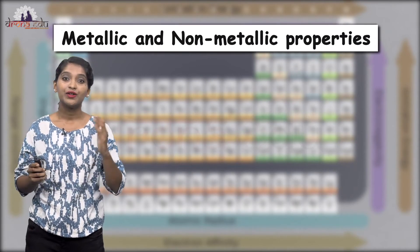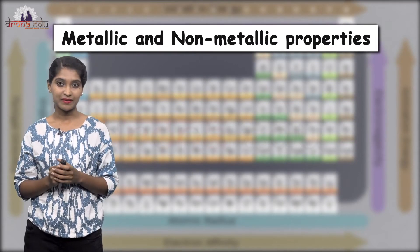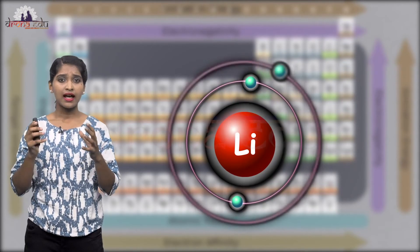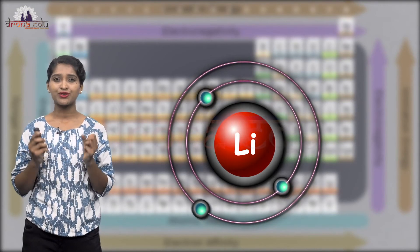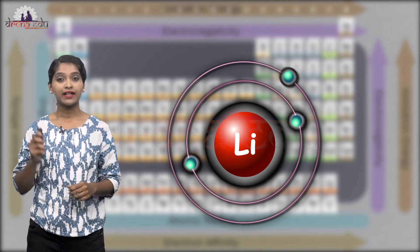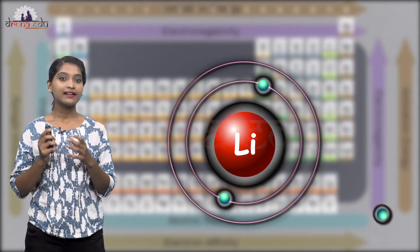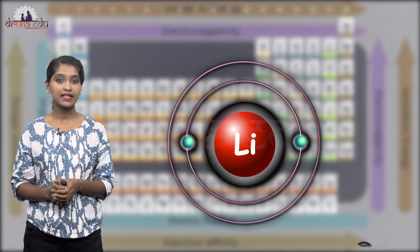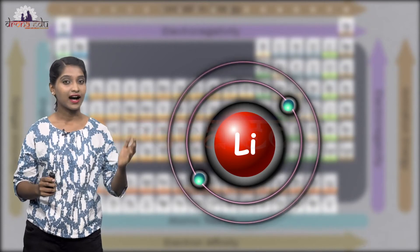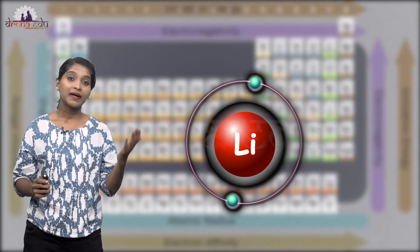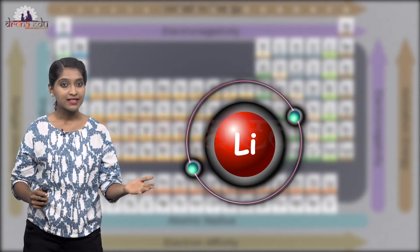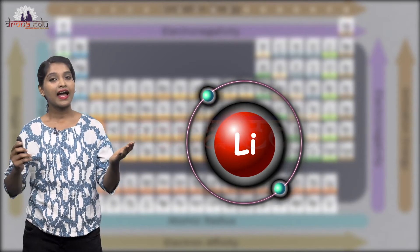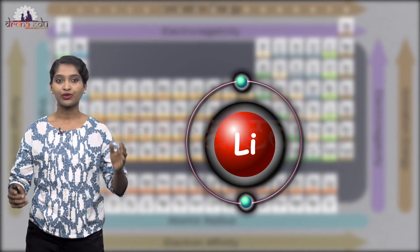Metallic and non-metallic properties. Metals tend to lose their electrons and form bonds, so they are electropositive in nature. In the periodic table, the elements on the left are metals. Metallic properties or electropositivity increases down the group.